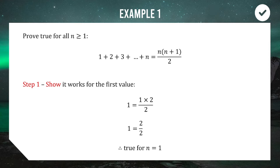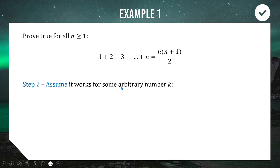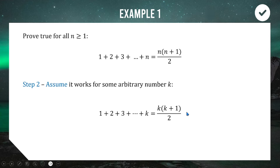For step 2 we're going to do a bit of assuming. We are going to assume that at some point in this string of numbers there is some number k that the equation holds true for. We've shown it works for 1; now we assume it works for an arbitrary integer k. You just rewrite the question but change the n's to k's — that's step 2, the easiest part.